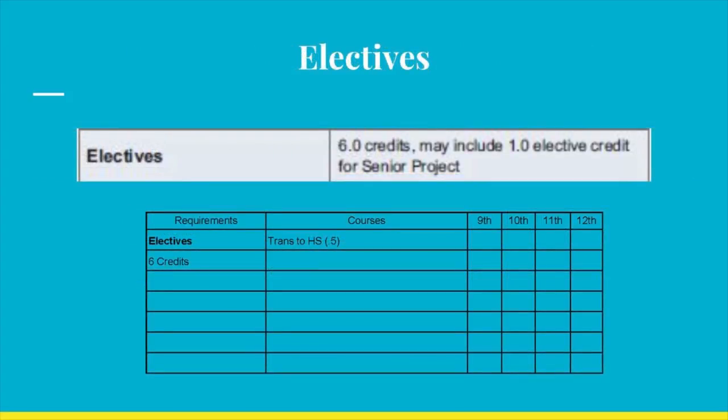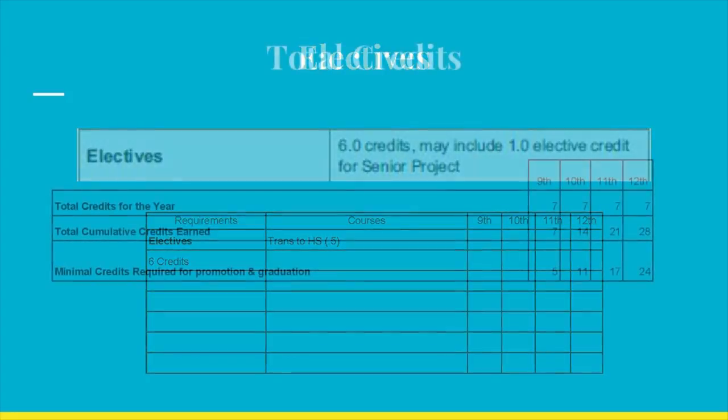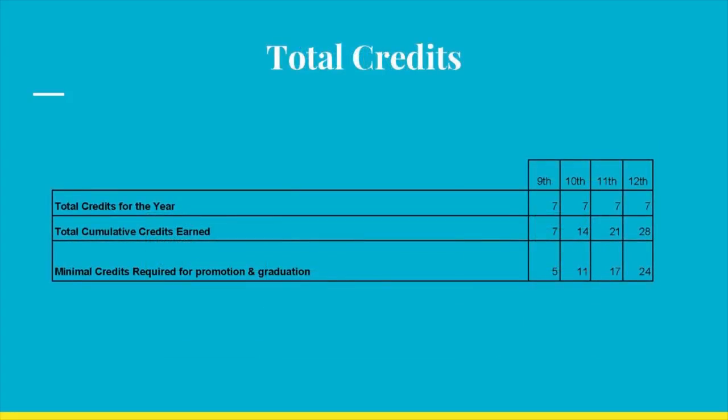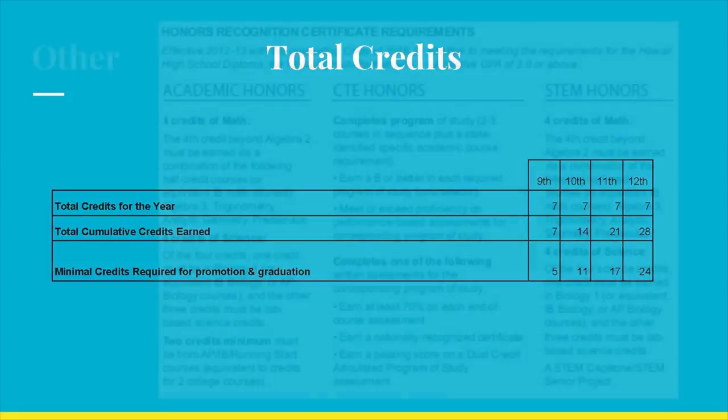Lastly, six credits must be earned in elective courses. Elective courses are all courses not listed above. Every year, a student is required to enroll in seven classes. Assuming one passes all classes every year after four years, a student will earn 28 credits. Remember, 24 credits are the minimum requirements for graduation. In order to be promoted to the next grade, a 9th grader must earn a minimum of five credits, a 10th grader 11 credits, and an 11th grader 17 credits.